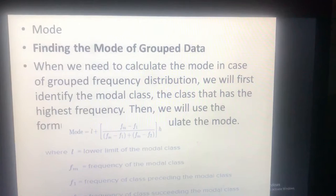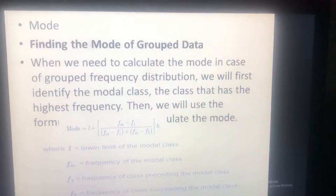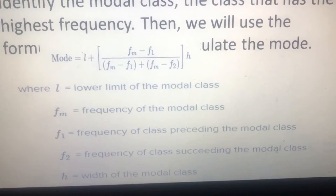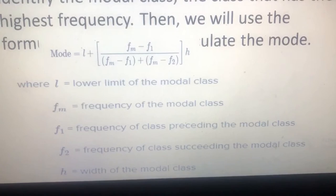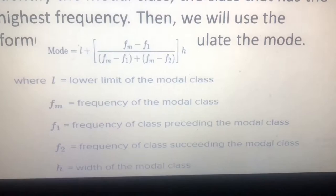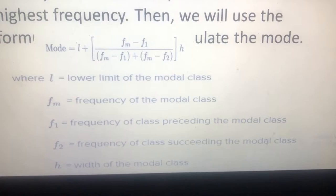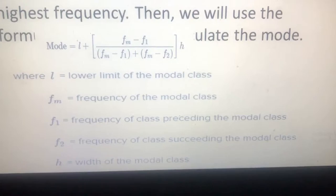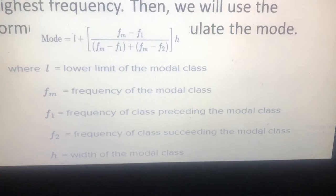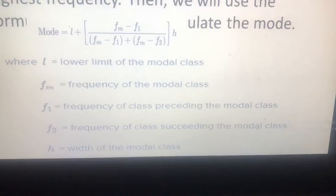We will use the formula: Mode equals L plus (fm minus f1) divided by (fm minus f1 plus fm minus f2), all times h. Here, L is the lower limit of the modal class, fm is the frequency of the modal class, f1 is the frequency of the class preceding the modal class, f2 is the frequency of the class succeeding the modal class, and h is the width of the modal class.